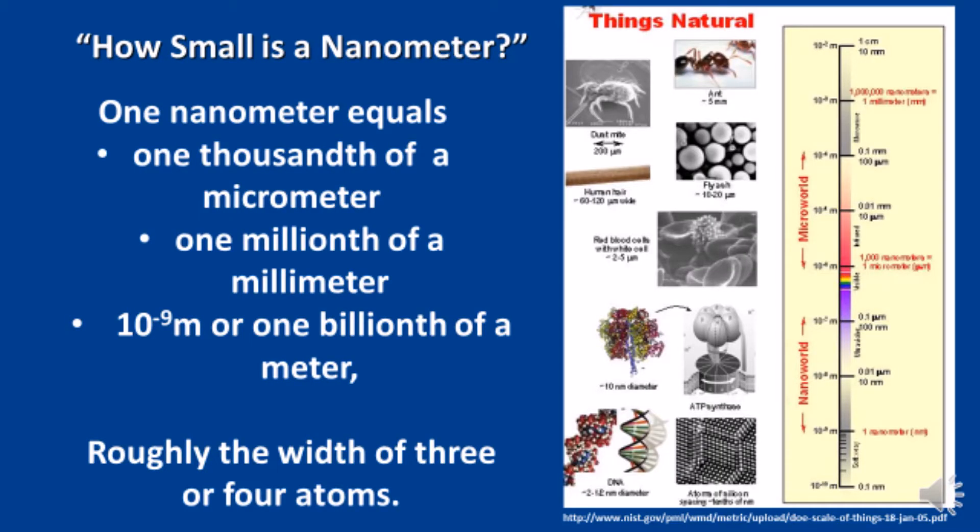How small is a nanometer? One nanometer equals one thousandth of a micron or one millionth of a millimeter. It is ten to the minus nine meters or one billionth of a meter.